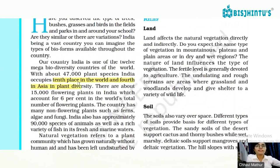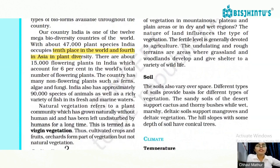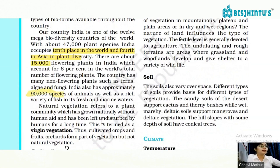India occupies 10th place in the world and 4th place in Asia in plant diversity. We studied data like 15,000 species of flowering plants and around 90,000 species of animals. A survey has been conducted to find out the biodiversity percentage in our country.